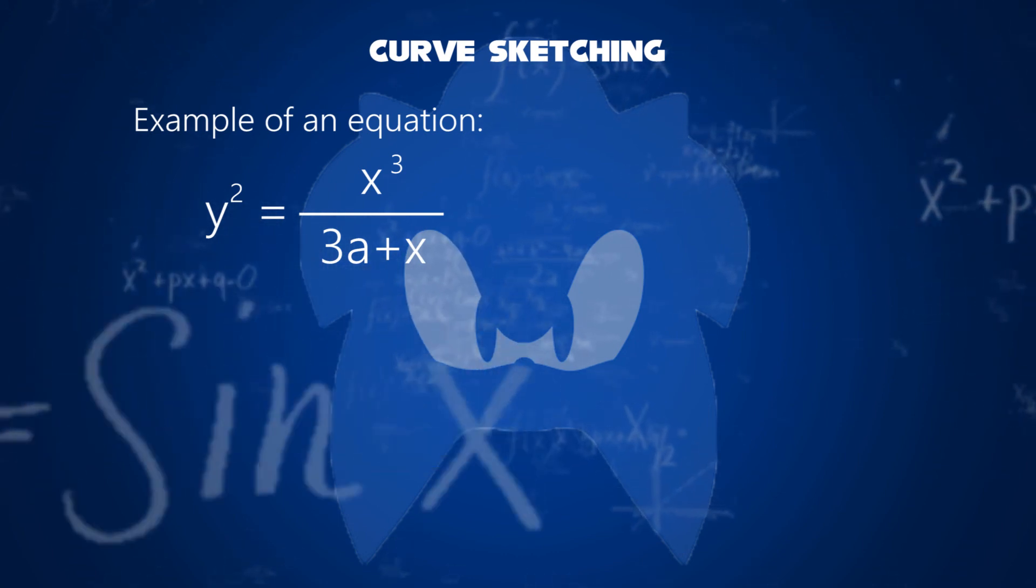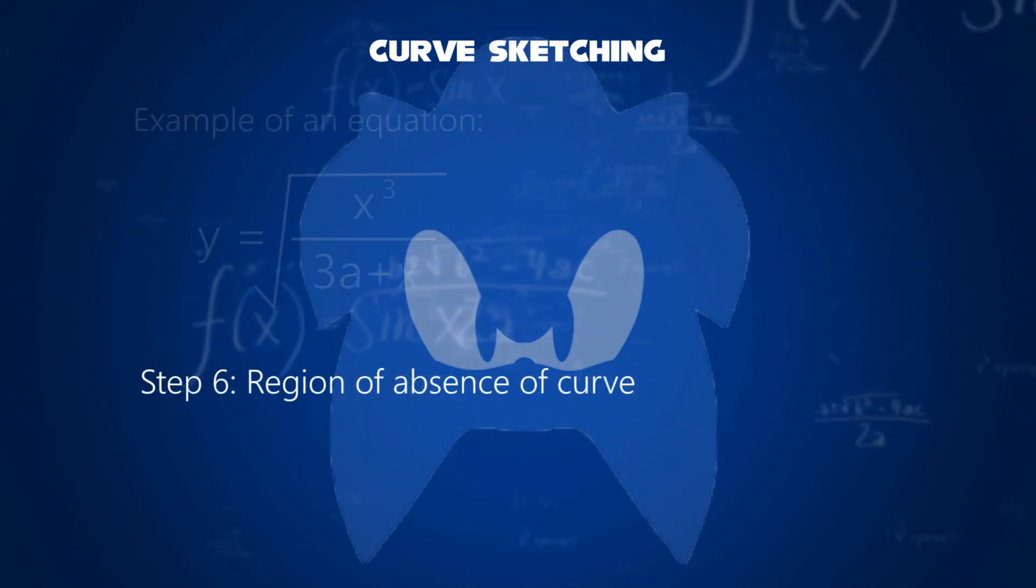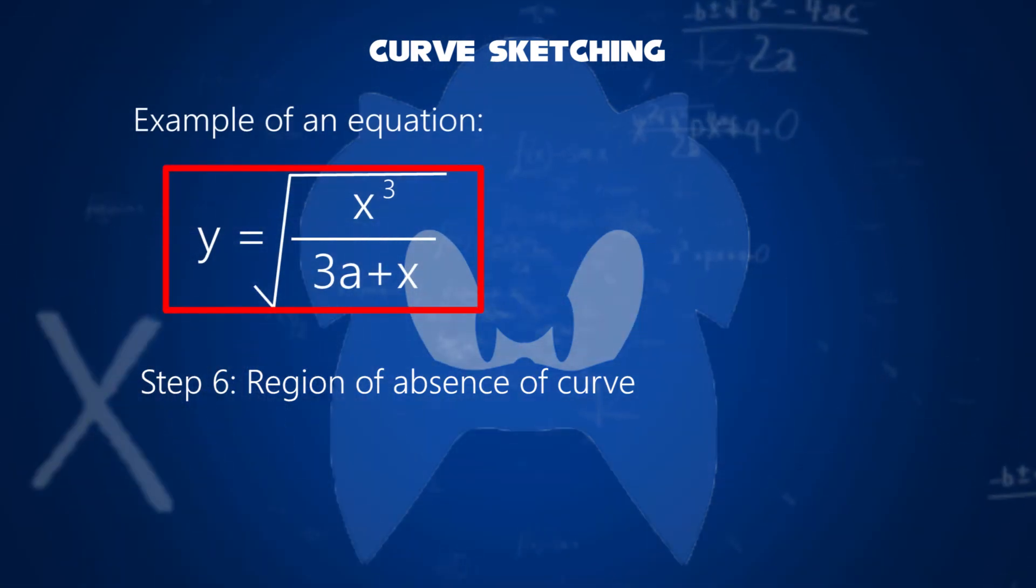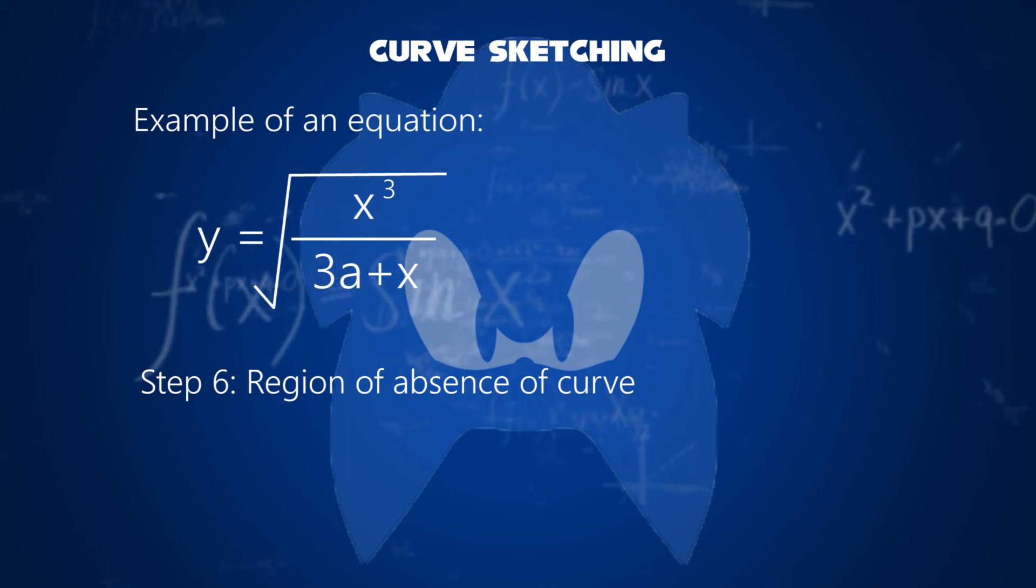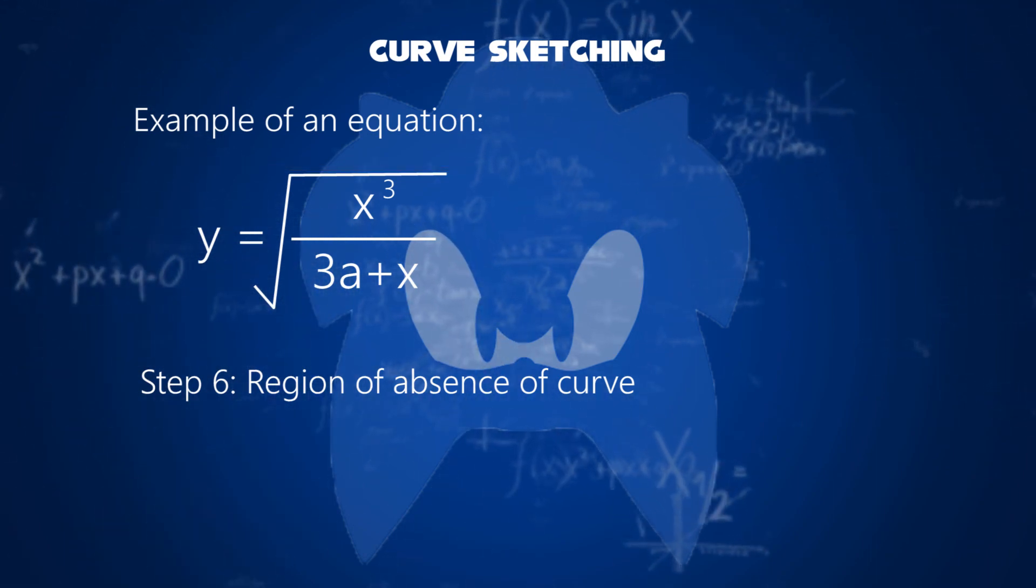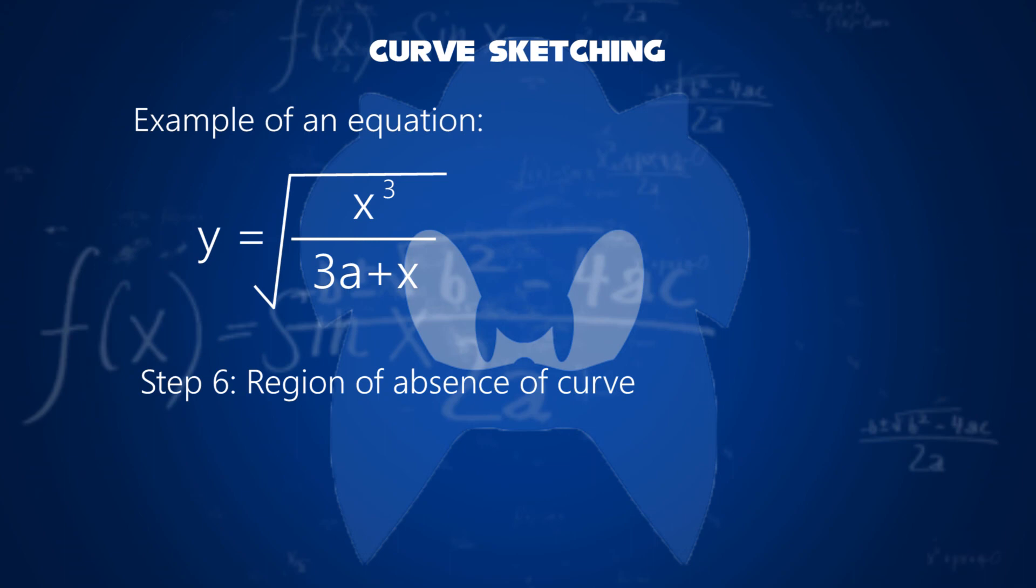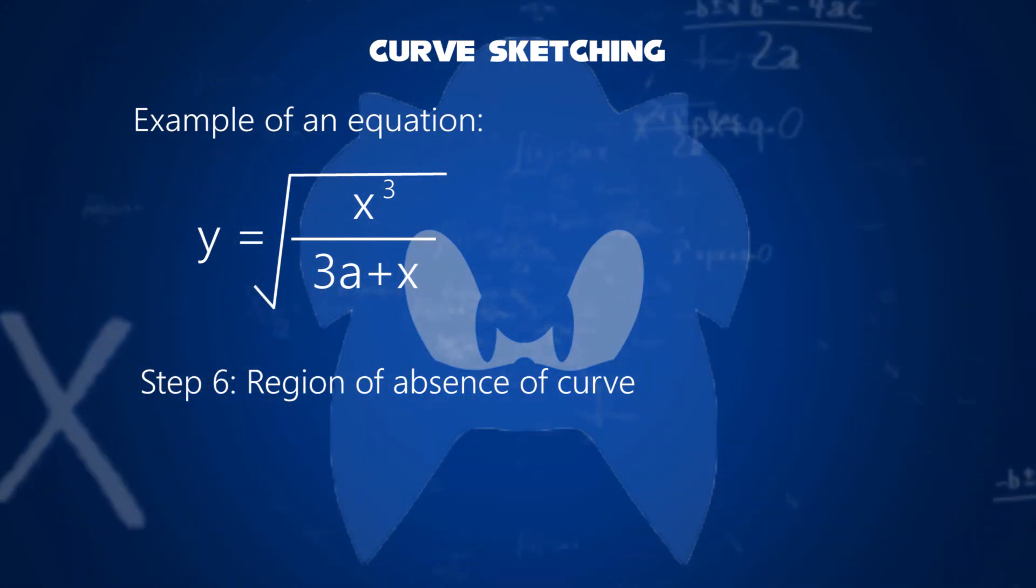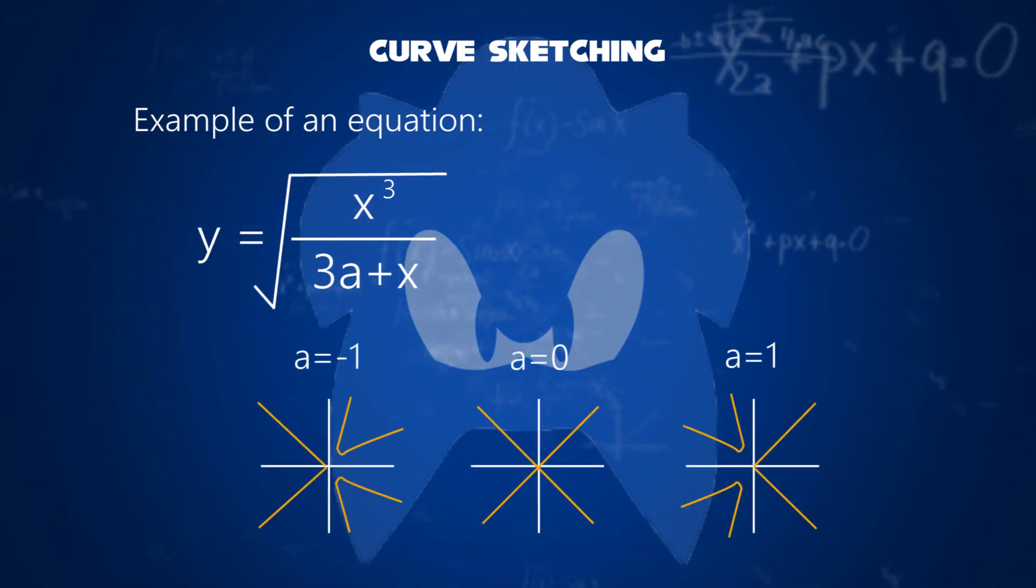Final step, region of absence of curve. You can change the above equation from y squared to y, that is, square root x cubed divided by 3a plus x. Then you can substitute these values, where a can be any value of its asymptote. This can be plotted on the graph as follows.